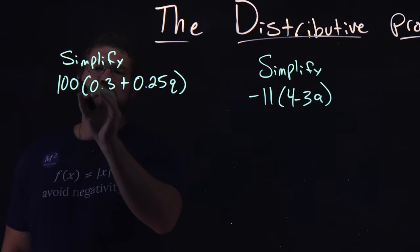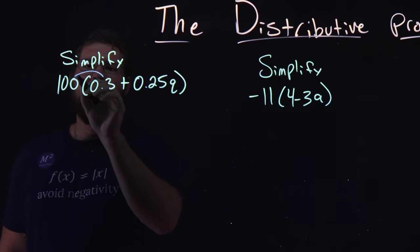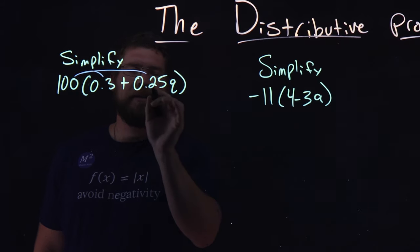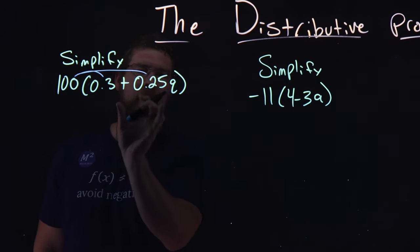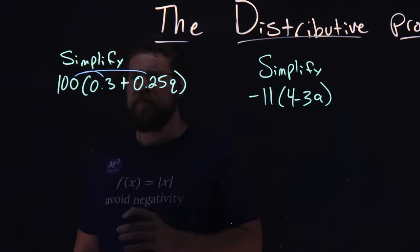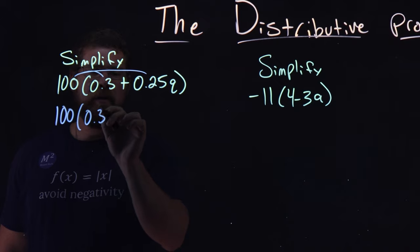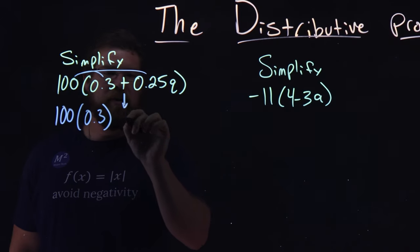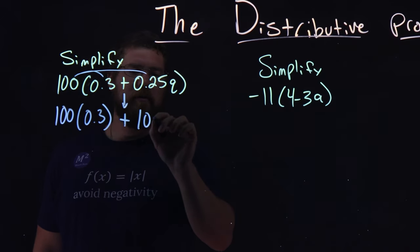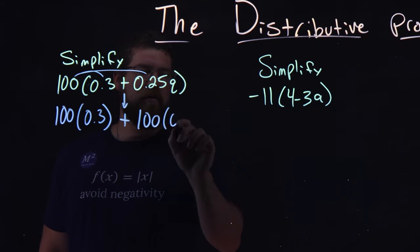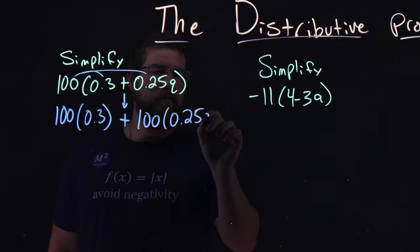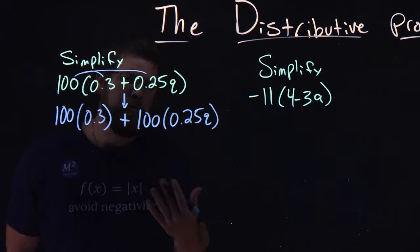What we have to do is to distribute, hence the term, the 100 to both parts here. We have two different terms here. We can't combine them, they're not like terms. And so, we have to multiply this out. We have 100 here times 0.3, then the plus sign comes down. Then we have 100 times the second term, 0.25q.